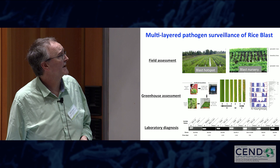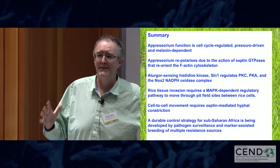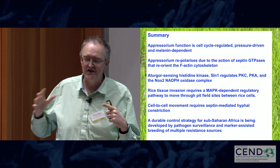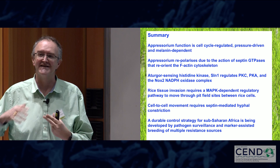To summarize: Magnaporthe's infection is a highly orchestrated and regulated process, strongly linked to cell cycle control and the operation of specific signaling pathways able to perceive the external environment. Rice tissue invasion similarly works in the same way, requiring regulation of morphogenesis at the same time as regulating the suppression of host defenses. And finally, we're developing this durable control strategy to try and alleviate some of the problems that rice blast is causing in sub-Saharan Africa.